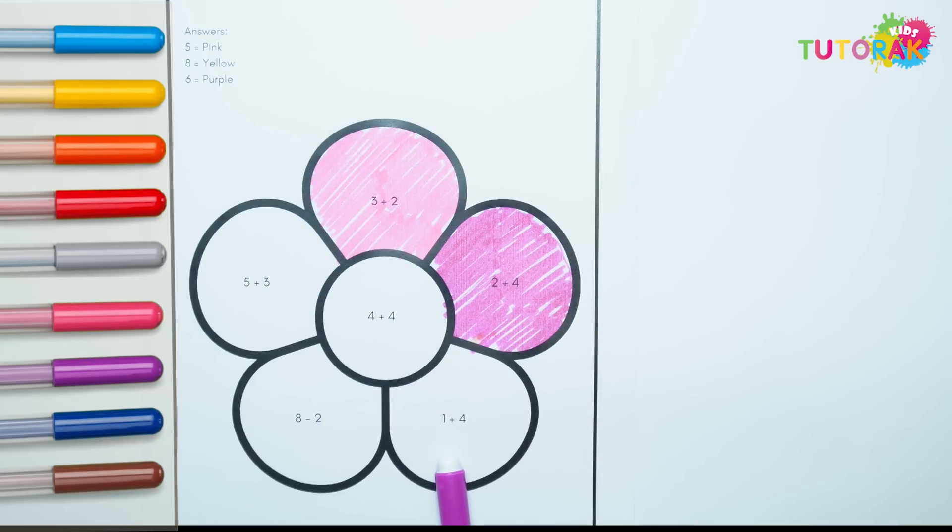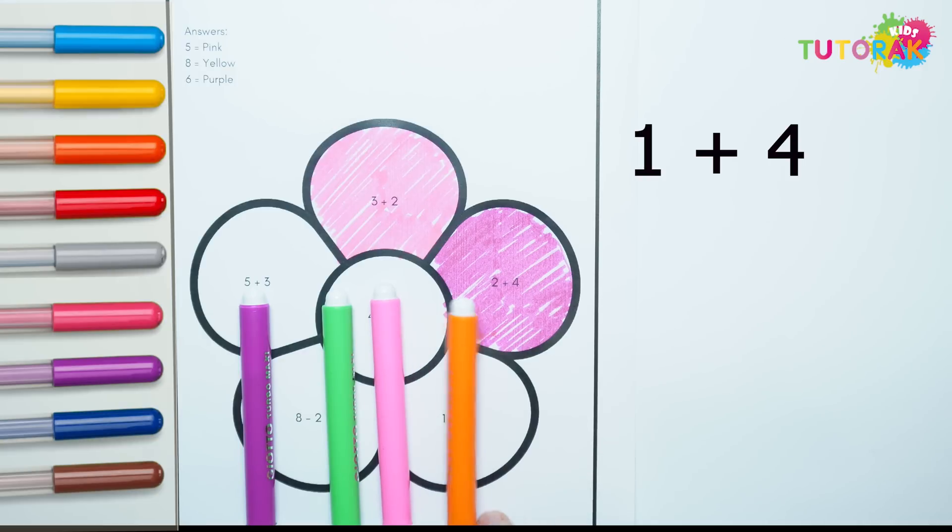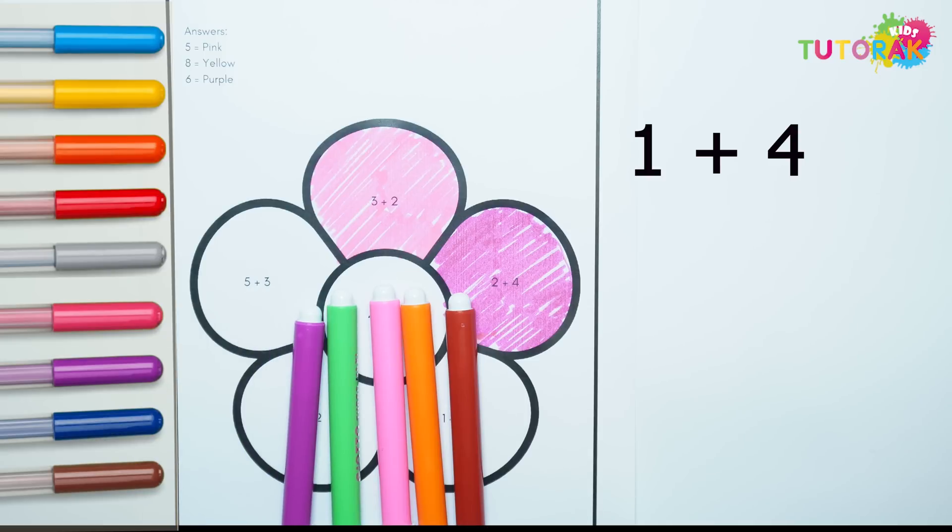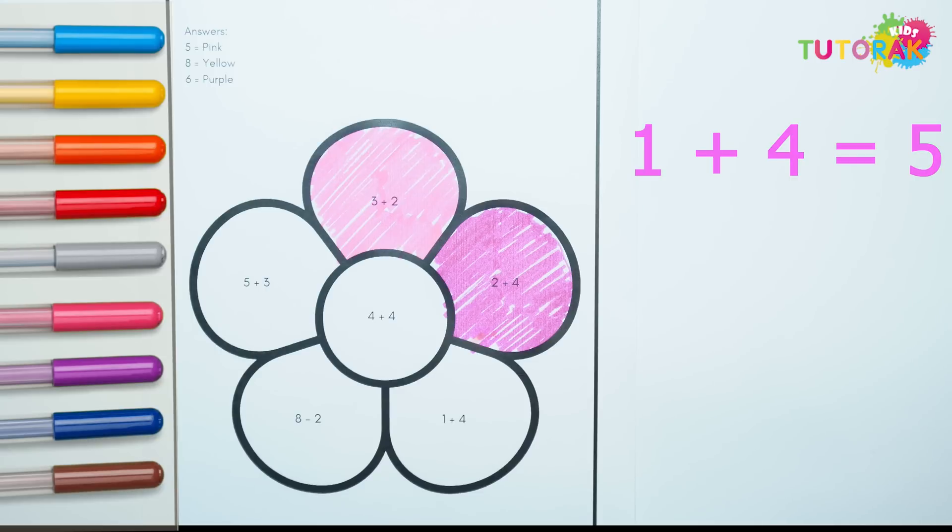The next sum is 1 plus 4. 1 plus 1, 2, 3, 4. 1, 2, 3, 4, 5. That's number 5. And number 5 was color pink.